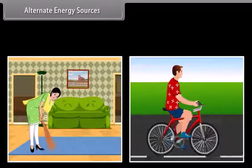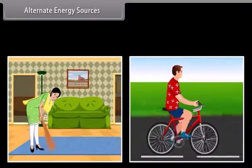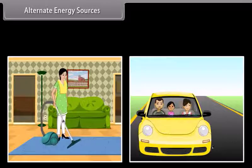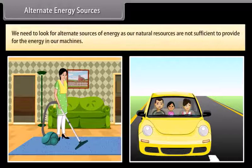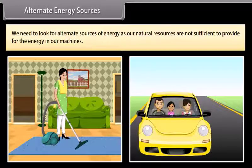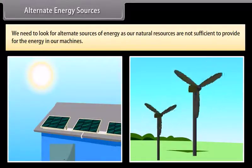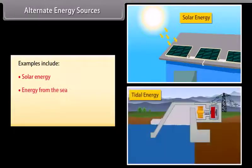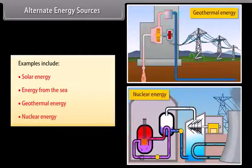Alternate energy sources. As we progressed, our day-to-day life activities also changed. We now get most of our work done by machines. Due to this, we need to look for alternate sources of energy as our natural resources are not sufficient to provide for the energy in our machines. Examples include solar energy, energy from the sea, geothermal energy, and nuclear energy.